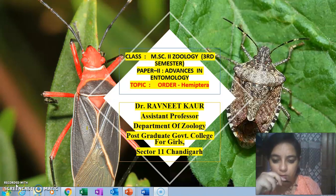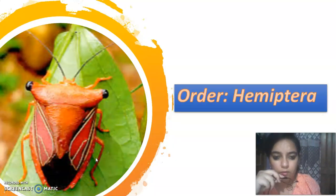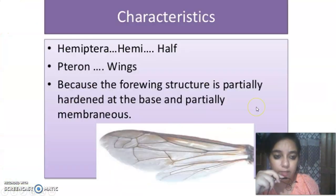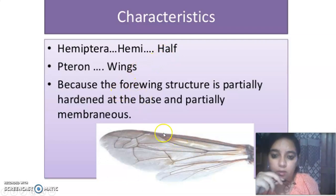Hello students, welcome to a new class. Today we are going to discuss Order Hemiptera. First, let's understand why the name Hemiptera has been given. Hemi means half and pteron means wings, so it relates to half and wings. In this order, the forewing structure is modified — it is partially hardened and partially membranous.